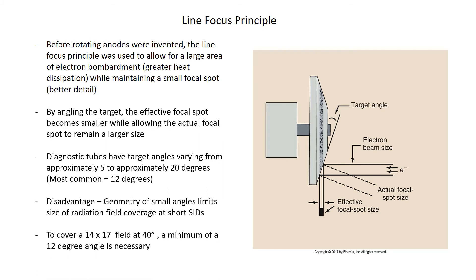In order to cover a 14 by 17 field at 40 inches, a minimum of a 12-degree angle is necessary. We utilize 14 by 17 fields for chest radiography, KUBs, and things like that, so we need that 12 degrees to cover the field with radiation.